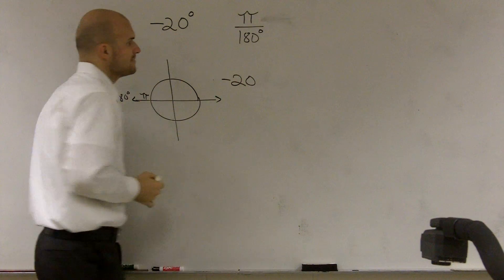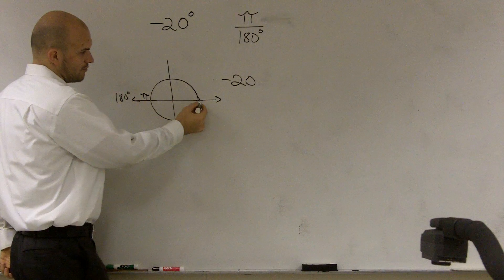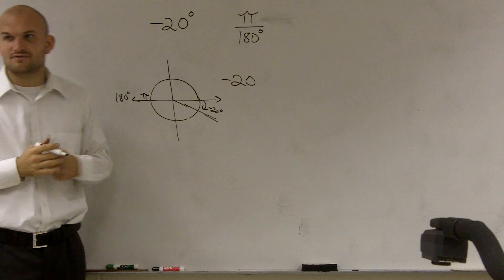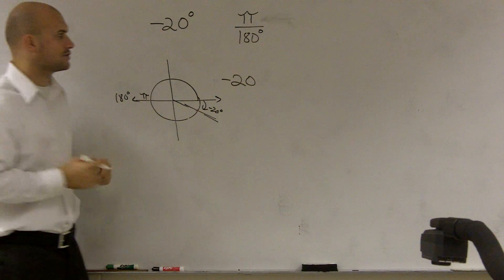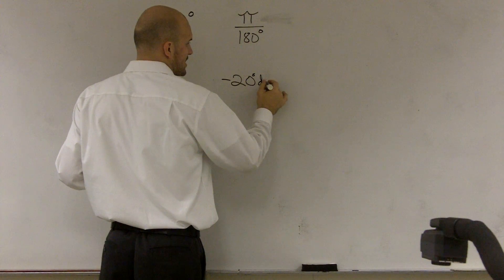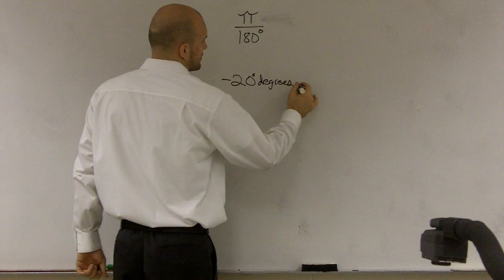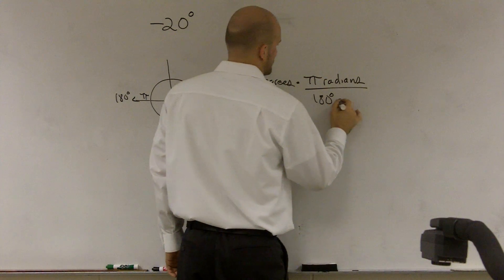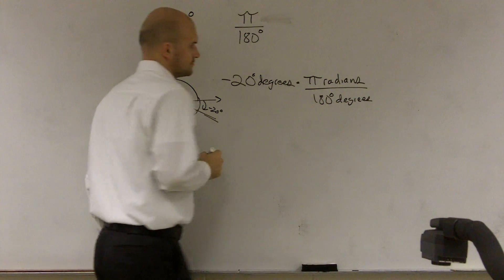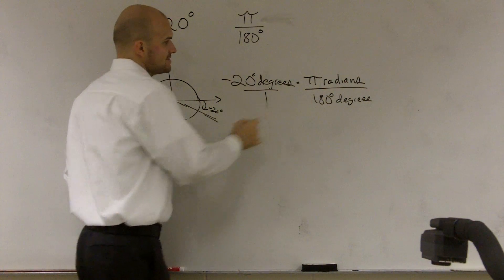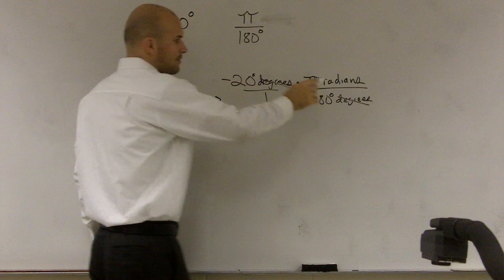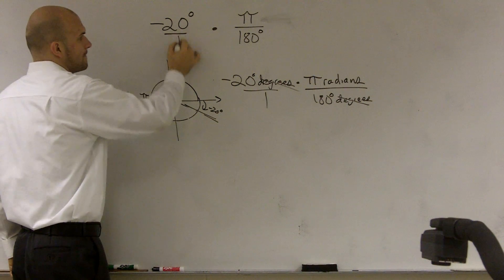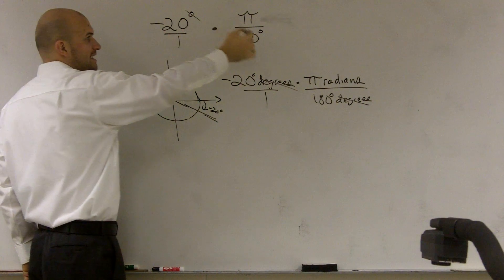Now, one thing you guys can remember — if I want to say, what is negative 20 degrees, which would be somewhere around here, in radians? So first of all, I need to get rid of the degrees. I'm going to write this out for those of you in physics or chemistry, any of those science classes where you deal with a lot of units. If you notice, degrees over degrees is actually going to cancel out, and what I'll be left with is radians. So when I multiply negative 20 degrees over 1 times pi over 180, the degrees cancel out.